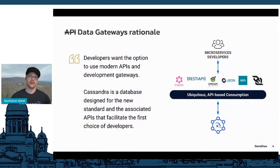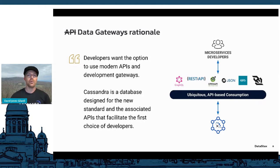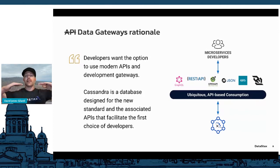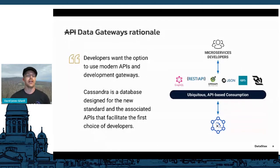The whole rationale for data gateways is to provide a ubiquitous API layer that speaks languages all developers talk regardless of programming language — and staying with APIs that are modern. How many folks still want to be working with XML? So Stargate provides essentially a proxy that goes between developers and the data store, with pluggable APIs that most are familiar with: GraphQL, REST, JSON, and gRPC.